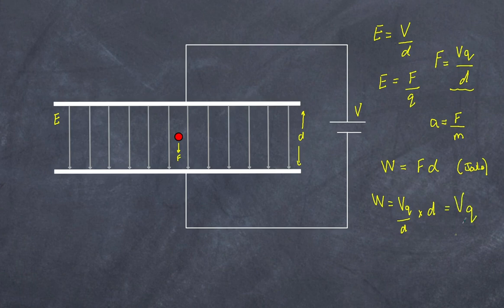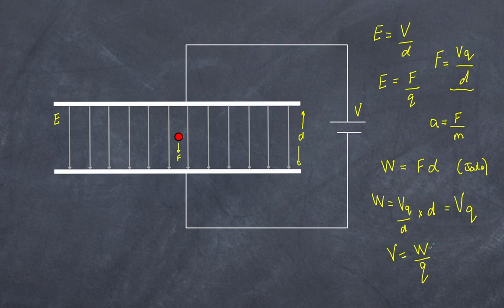Rearranging, voltage equals the work done per unit charge Q. This brings us full circle — the definition of voltage is the amount of work done, or energy, per unit charge, tying together all of these variables.